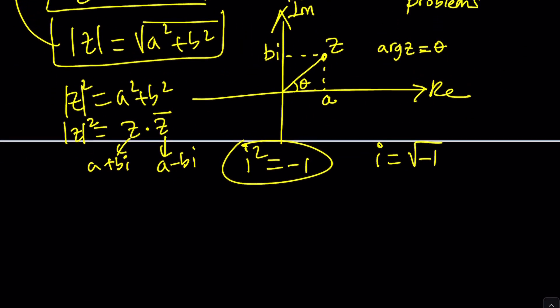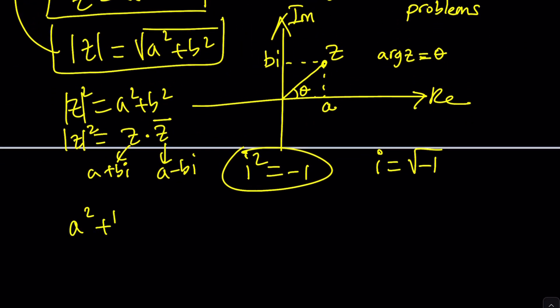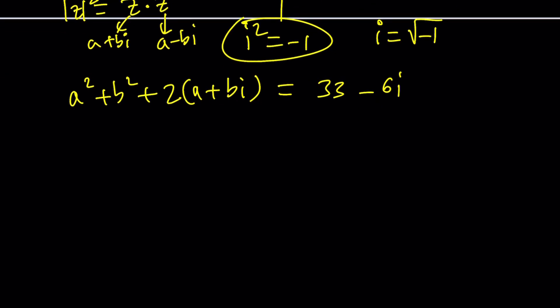So I'm going to replace absolute value of z squared with a squared plus b squared, and then I have two times z, which is a plus bi, equals 33 minus 6i. Let's go ahead and put the real parts together because we can do so. a squared plus b squared plus 2a plus 2bi equals 33 minus 6i.